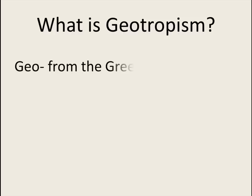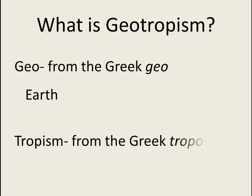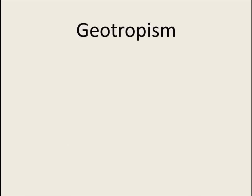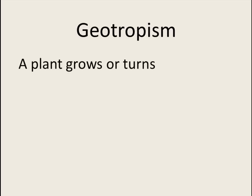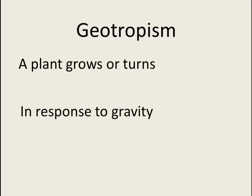Geo comes from the Greek word geo. It means the earth. Tropism comes from the Greek tropos, which means turning. Geotropism: a plant grows or turns in response to gravity.